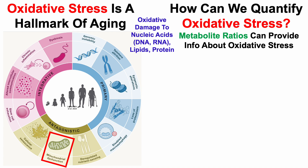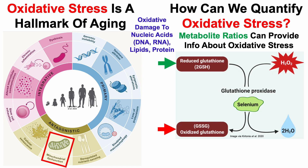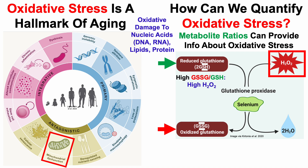Metabolite ratios can also provide information about oxidative stress, with the most popular being the reduced to oxidized glutathione ratio. In the presence of oxidative stress — in this case hydrogen peroxide, H2O2 — glutathione in its reduced state, GSH, more specifically the thiol group SH, becomes oxidized such that two molecules of reduced glutathione become one molecule of oxidized glutathione, GSSG. Each sulfur forms a disulfide bridge, so the two molecules become one: two reduced become one oxidized.